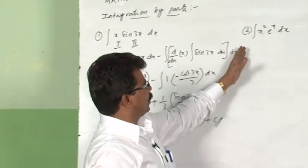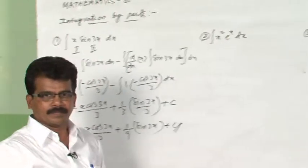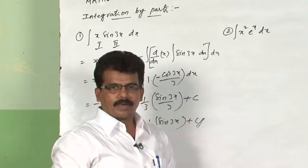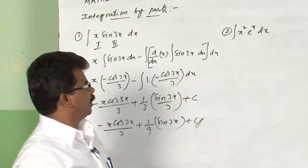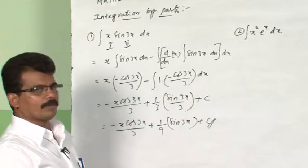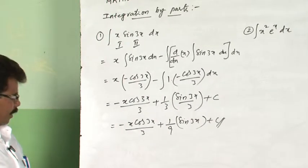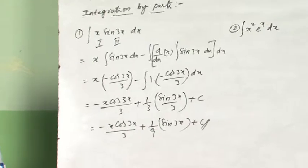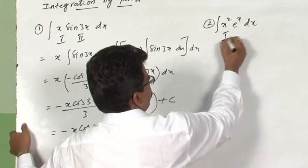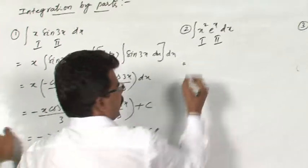Let us see the second question: ∫x²eˣ dx. Is it in the form of a product of two functions? Yes — x² is algebraic and eˣ is exponential, so it already follows the ILATE form. This is the first function and eˣ is the second function.